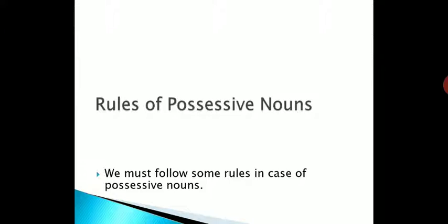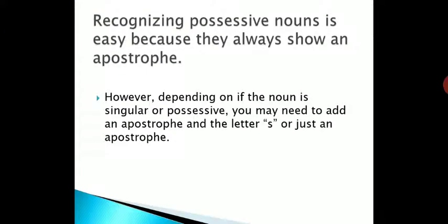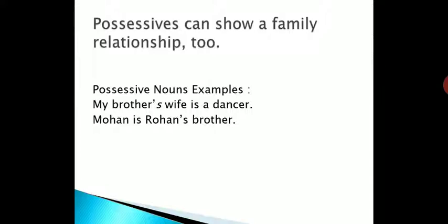Now we will see the rules of possessive nouns. Recognizing possessive nouns is easy because they always show an apostrophe. If the noun is singular and does not end with S, we add both apostrophe and S. For example, 'the dog's leg was hurt' — the word 'dog' does not end with S, so we write dog's with apostrophe S.